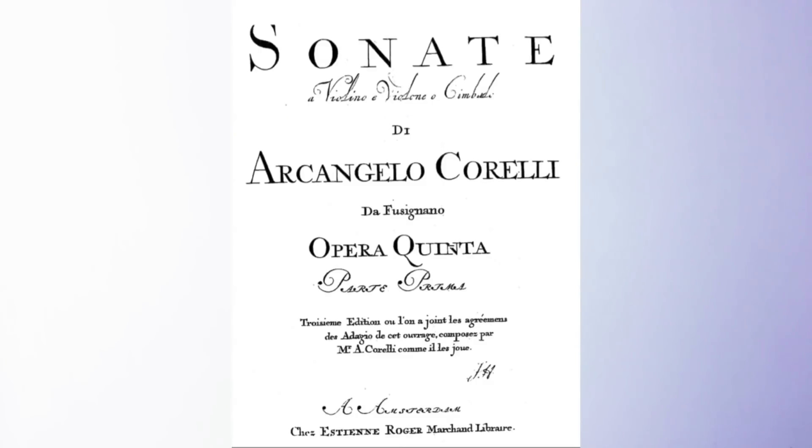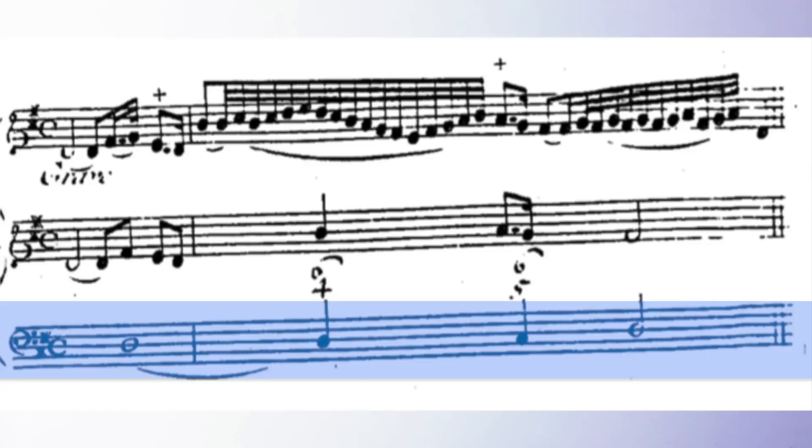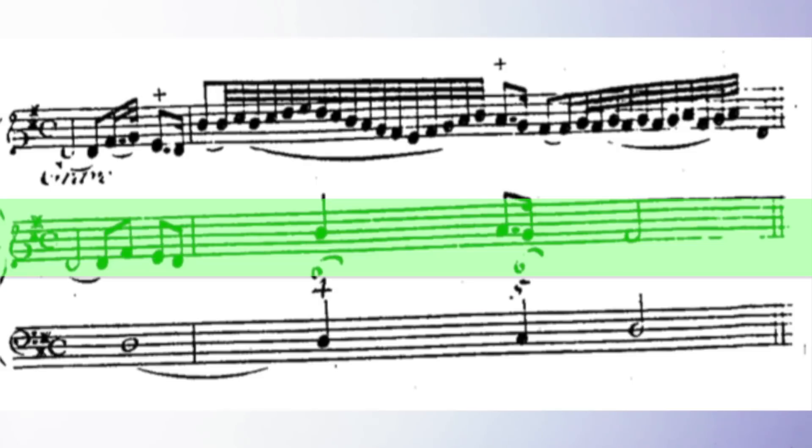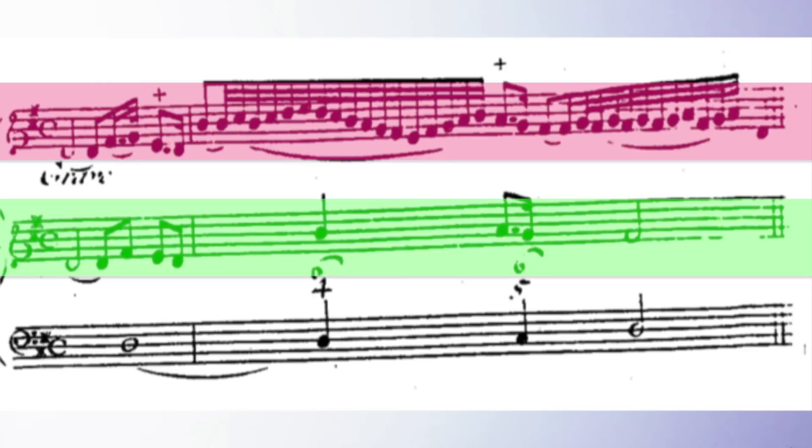Let's take Corelli Violin Sonata Op. 5. Those sonatas are notated in a very interesting way. Here we have the accompaniment part. No real mystery here. Here we have the standard notation for the melody played by the violin.